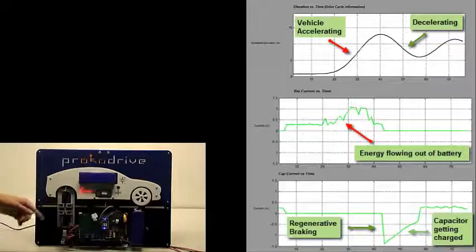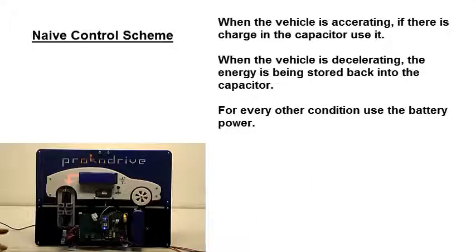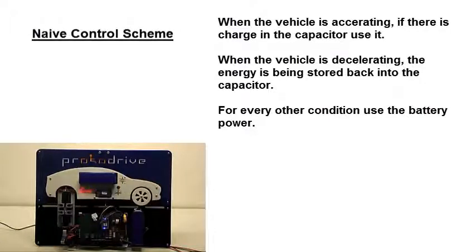Now the control scheme we're using here is what we're calling the naive control scheme, which is basically the simplest control scheme. It basically says that if you're doing regenerative braking and the capacitor can accept a charge, then charge the supercapacitor. And if you're accelerating and there's charge in the supercapacitor, then use the capacitor. But for all other times, then we go to the battery.